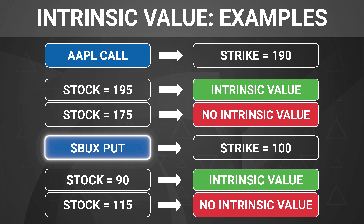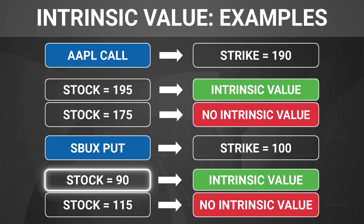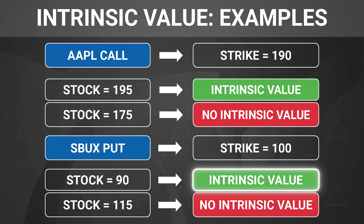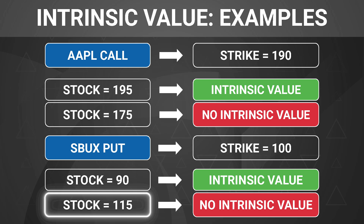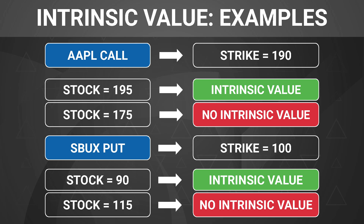Suppose we're looking at a put option in Starbucks with a strike price of $100. If Starbucks is at $90, this contract has immediate value to the long put holder — he could sell Starbucks at $100 when it's only worth $90. If he already owns the shares, he could sell them for $100; if he doesn't, he could buy them at $90 and exercise his put to sell at $100, producing immediate value. Conversely, if Starbucks were at $115, there'd be no immediate value — why exercise your put to sell at $100 when you could sell at $115 in the open marketplace?